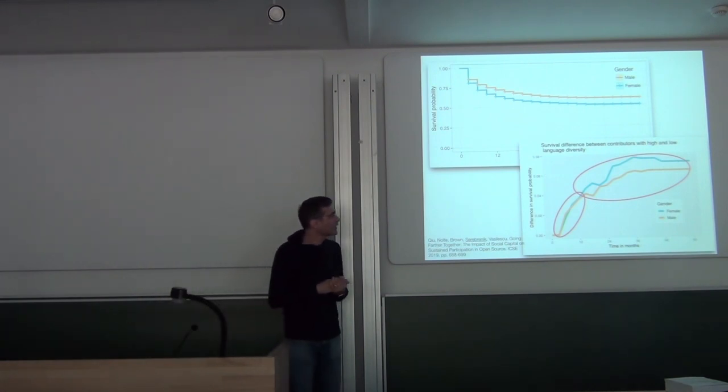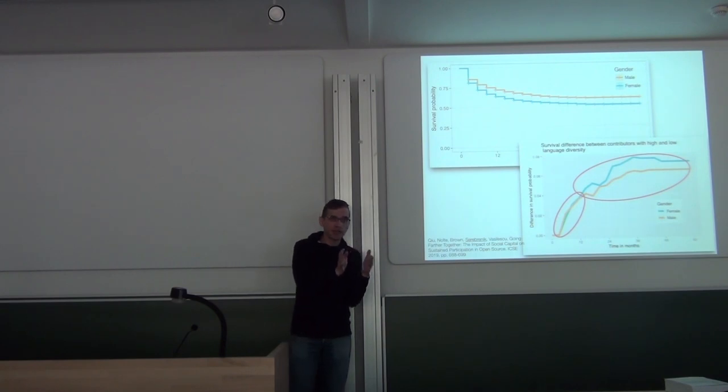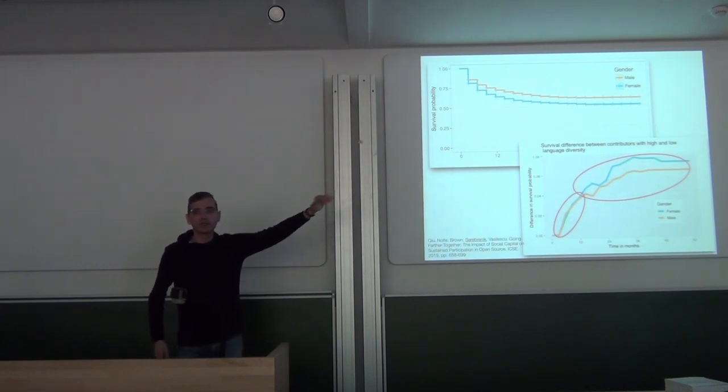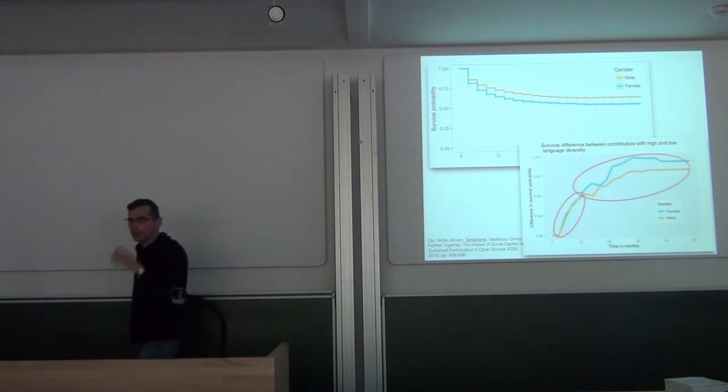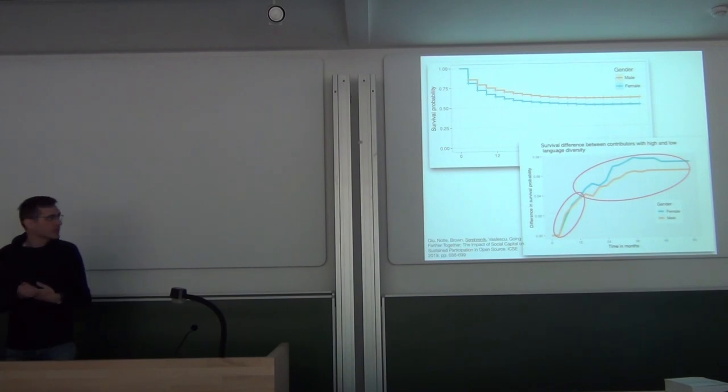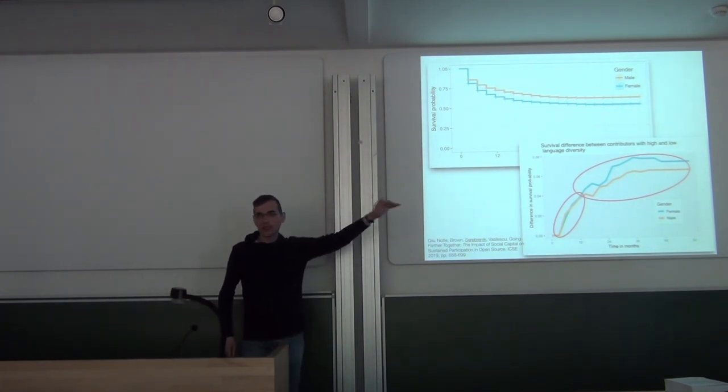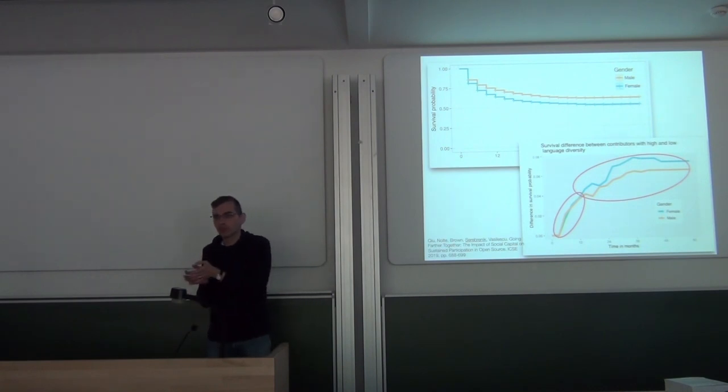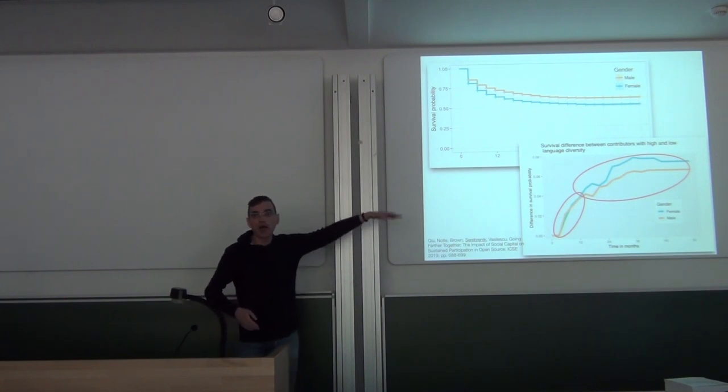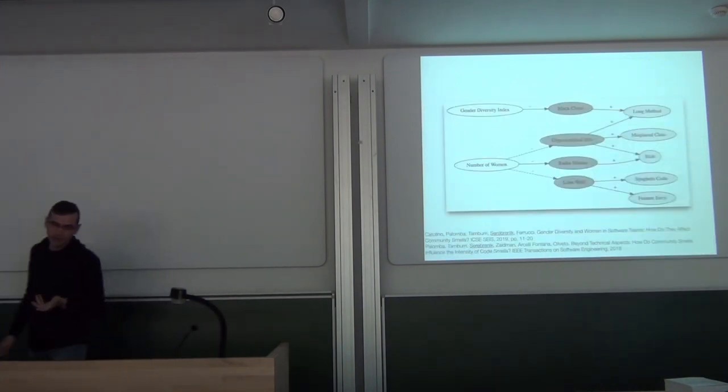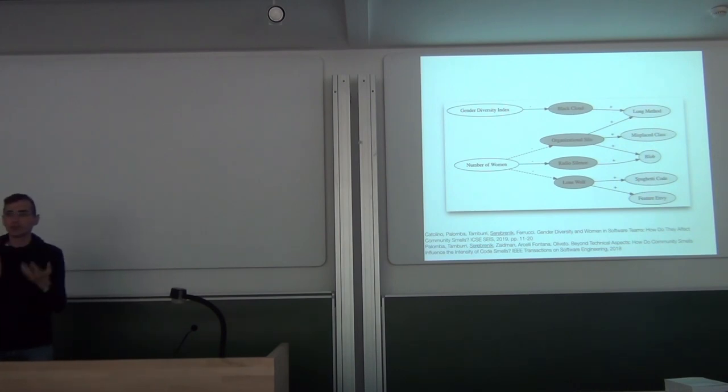So the plot in the lower part of the slide shows difference between survival likelihood of individuals that have involvement in a highly diverse project in terms of programming languages and low diversity. You see that this difference is always positive, right? It is always a good idea for contributors of any gender to be involved in projects that employ different programming languages. What you do see further is that for long-term involvement, for involvement after 12 months, this involvement in projects with different programming languages is more beneficial for women than for men. This is the blue curve going higher than the orange curve.